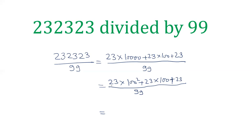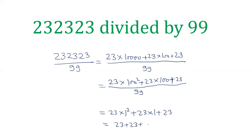The remainder when 23 is divided by 99 is 23 itself. And 100 divided by 99 gives remainder 1, so 100 squared gives remainder 1 squared, which is 1. Therefore, 23 into 1 plus 23 into 1 plus 23 gives 23 plus 23 plus 23, which is 69. So the final answer is 69. There are 3 occurrences of 23 divided by 99, so the answer is 69.